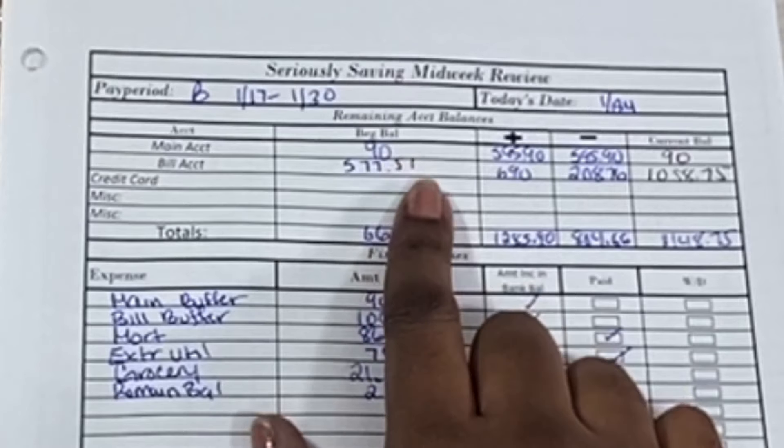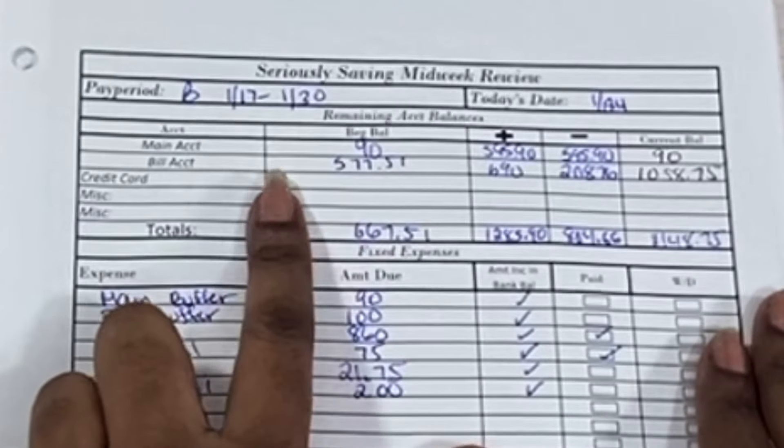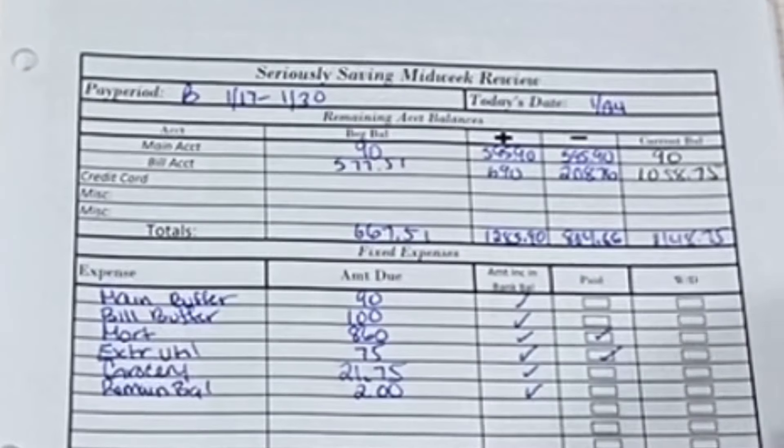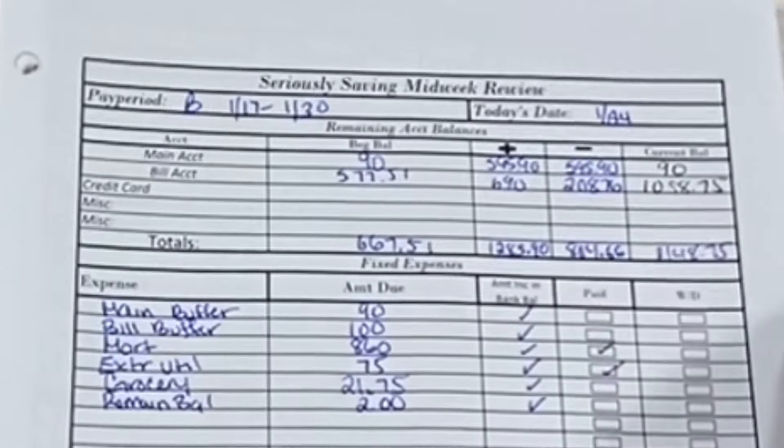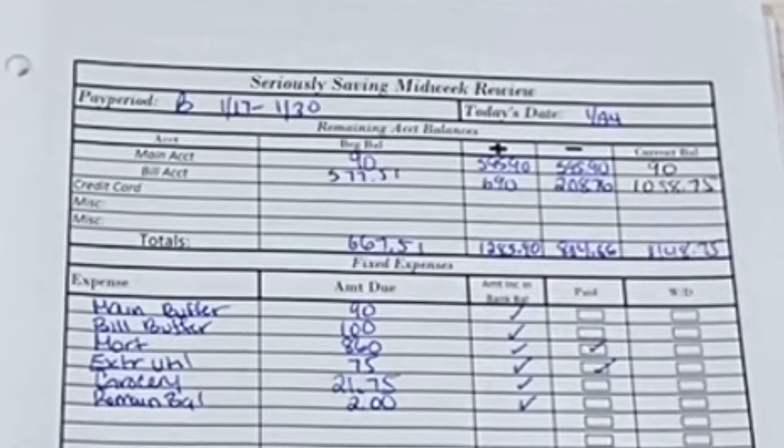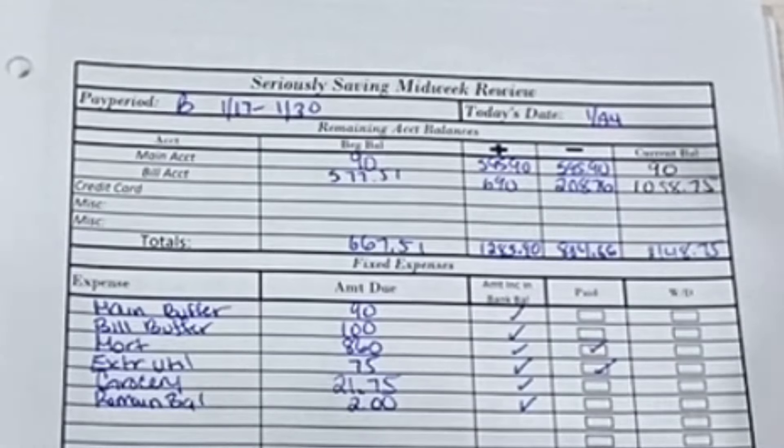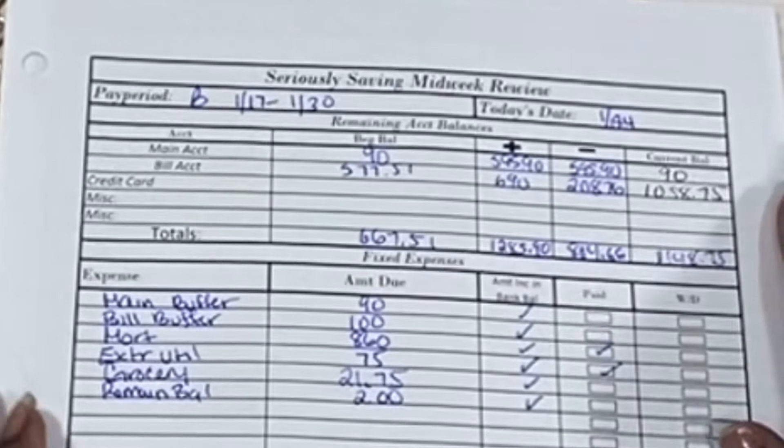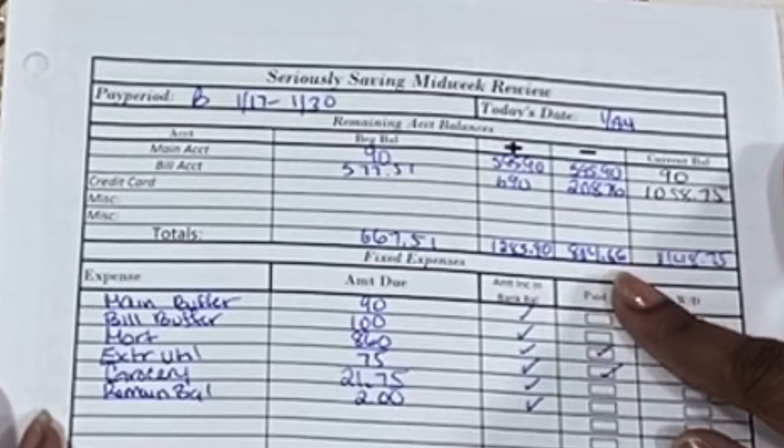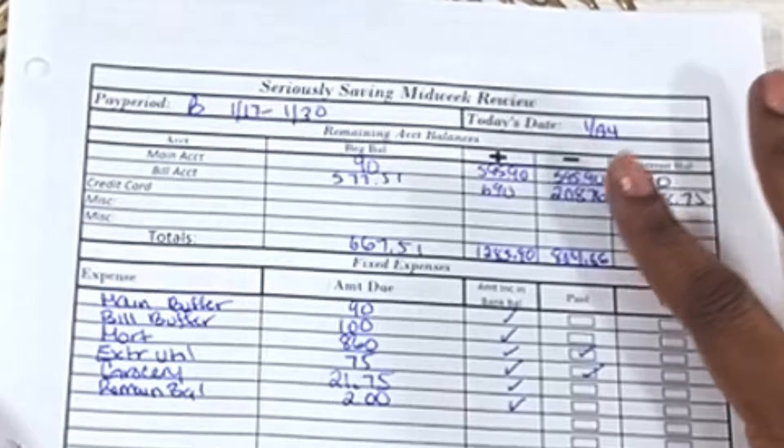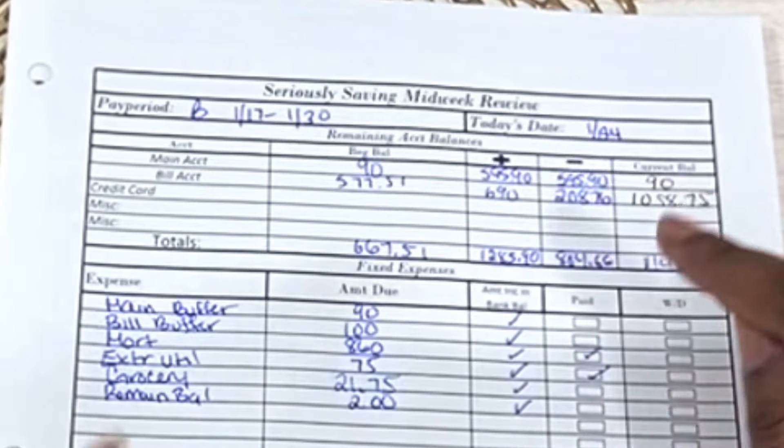So in the main bank account we started with $90 and we started with $577.51 in the bill account. Since then, we've gotten the paycheck added. That was $1,285.90 plus the $175 that automatically goes to our automatic savings accounts. But that's not included in here, of course, because those are savings accounts.